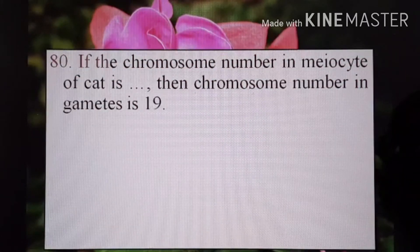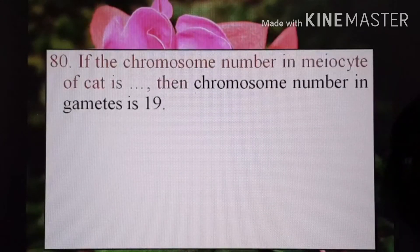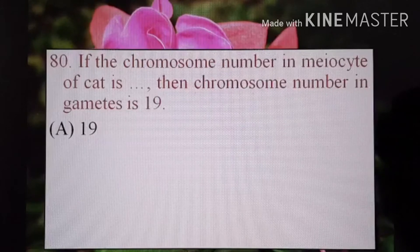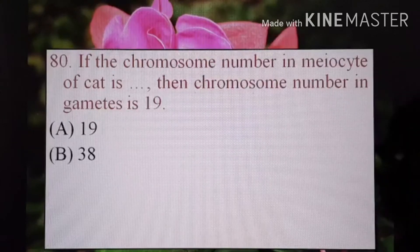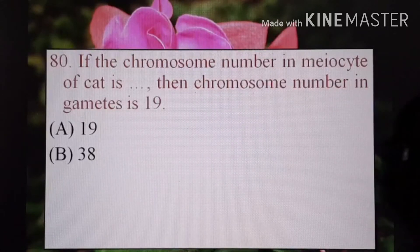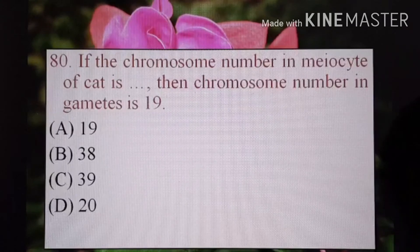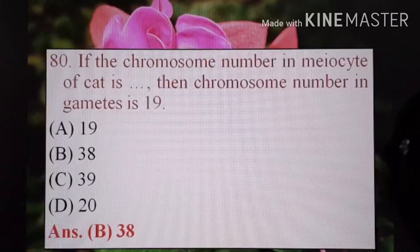Next, if the chromosome number in the meiocyte of cat is blank, and the chromosome number in gametes is 90 — A) 19, B) 38, C) 39, or D) 20. 19 times 2 is 38. The correct option is B) 38.